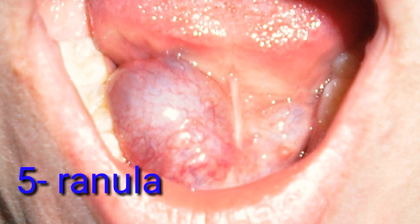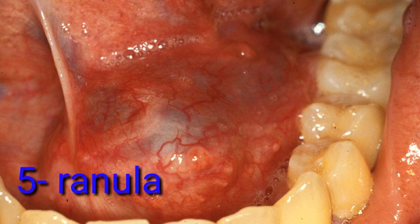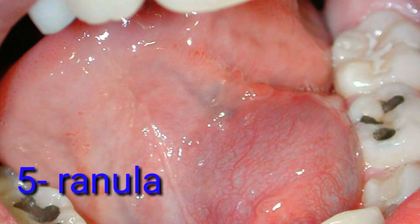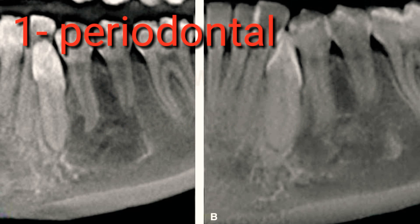Ranula is a cyst forming in the floor of the mouth, generally from the sublingual gland. The ranula forms in a manner similar to the mucocele but grows to a much larger size. It is non-painful, but the tongue may be raised and its motion obstructed, thus impairing mastication and speech.